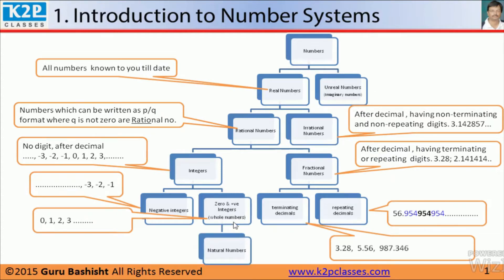Under whole numbers come natural numbers. Natural numbers means 1, 2, 3, excluding 0. So this is your number system.